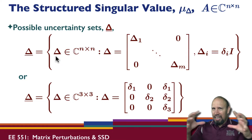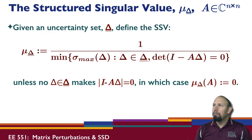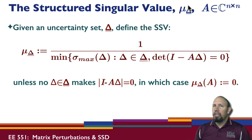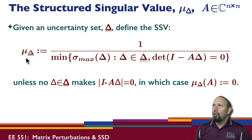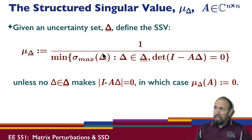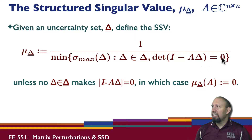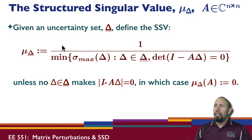We're putting layer upon layer on this problem. The structured singular value μ is just one value. So how do we define it? μ is defined to be one over the smallest singular value of delta, where delta is in our uncertainty set and the determinant of (I − AΔ) equals zero. So we're looking at the minimum of the maximum and the inverse of that — there's a lot going on here when you first see this.